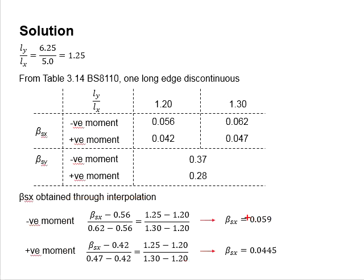From the interpolations, you eventually obtain beta sx to be 0.059 and beta sx of 0.0445 for the negative and positive moment conditions. The beta sy is given as 0.37 and 0.28 without requiring interpolations.